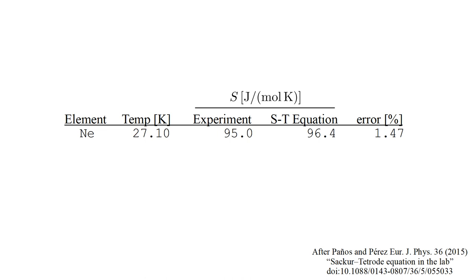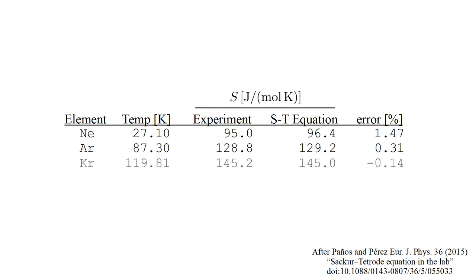Now let's look at experimental and theoretical entropy values for four different gases. For Neon at 27.1 Kelvin, the experimental entropy in joules per mole Kelvin is 95.0, while the Sackur-Tetrode equation predicts 96.4, an error of 1.47%. For Argon at 87.3 Kelvin, the experimental value is 128.8 while the theoretical value is 129.2, an error of 0.31%. For Krypton at 119.81 Kelvin, experimental and theoretical values are 145.2 and 145.0 respectively, an error of minus 0.14%. And for Mercury at 629.88 Kelvin, we have values of 190.3 and 190.4, an error of only 0.05%.